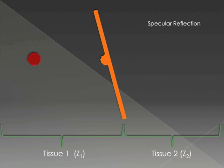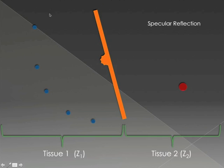If you don't have a smooth interface between your two tissues — with acoustic impedance one and acoustic impedance two — if you have a rough, bumpy, spiky surface, what happens then is specular reflection, where the sound wave breaks into numerous smaller sound waves as it's reflected from this interface.